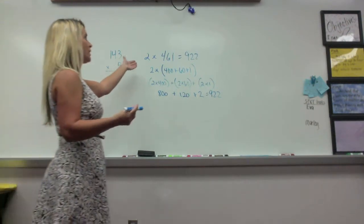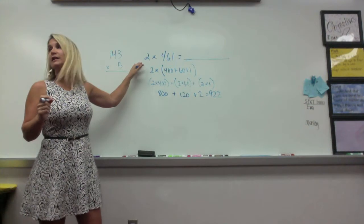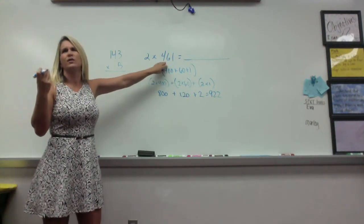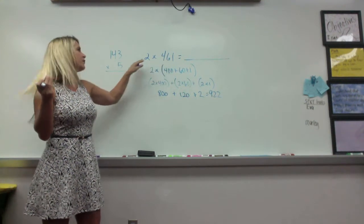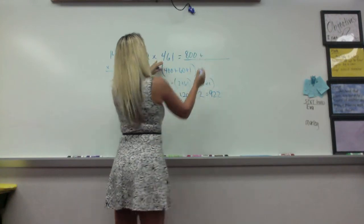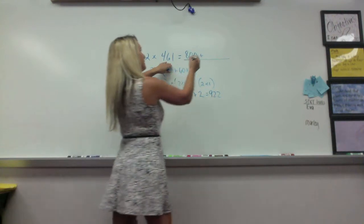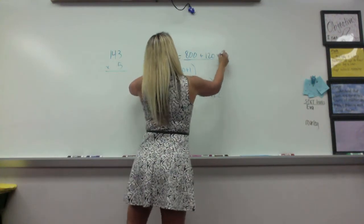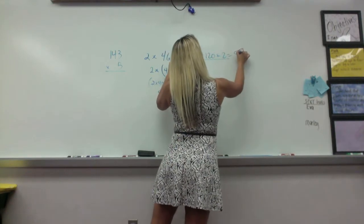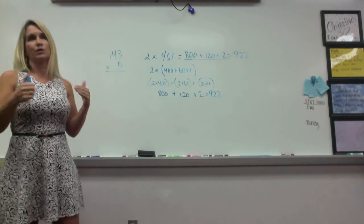You can also show it like we were doing last time, where I could just do it right here. So, if I look at it this way, I know this group did it this way. They just said four represents what number? Four hundred. So, they did two times four hundred is eight hundred. And they said the six represents what number? Sixty. So, two times sixty is one hundred and twenty. And then they said two times one, two.